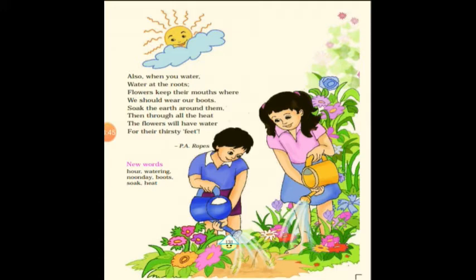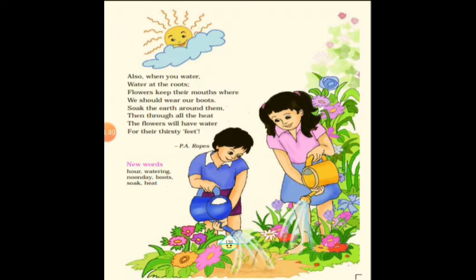Just as food provides nutrition to our body when we eat it, in the same way, water put into the roots helps the plant grow. Children, do you know where the mouth of the plant is? It is in their roots. That is why the poet says you should always pour water on the roots. Give enough water to the entire root system so the plant can store it and absorb it whenever needed.